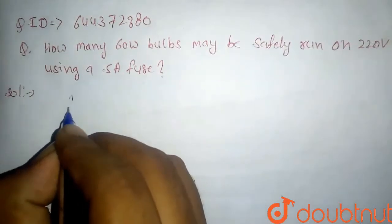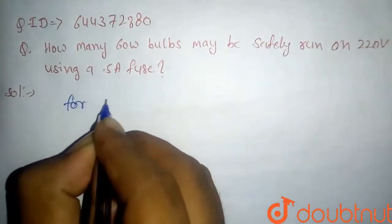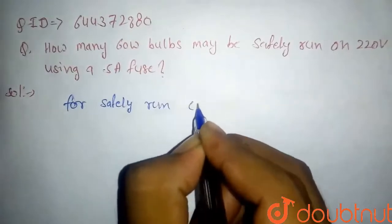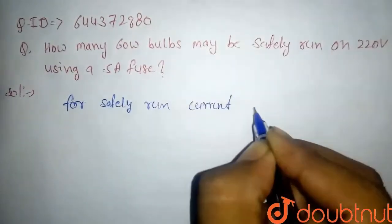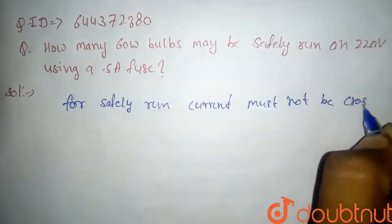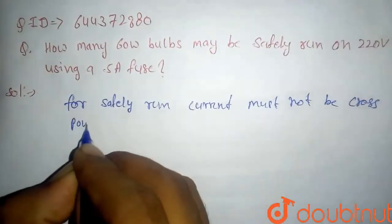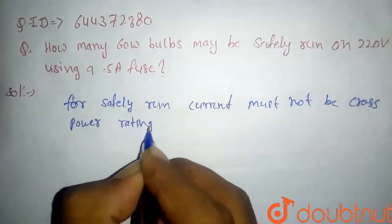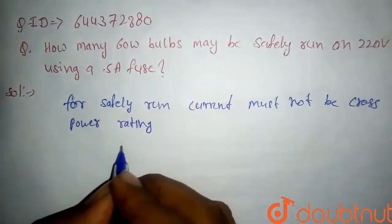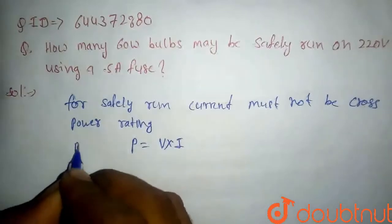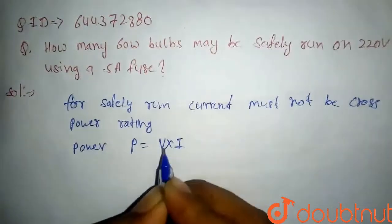We know that for safely run, current must not cross power rating. So according to this, the power should be equal to voltage into current. P equals V × I, where P is power. So here